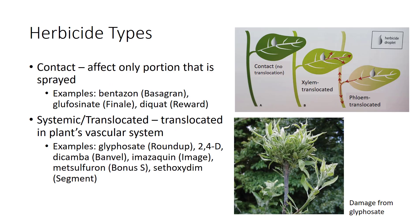Some herbicides have the ability to move throughout the plant — systemic or translocated — and others damage only the parts of the plant that are sprayed on contact. Soil-applied herbicides enter plants through roots, shoots, seeds, rhizomes, bulbs, or tubers. The primary site of entry for foliar-applied herbicides is the leaf. Once inside the plant, the herbicide must reach a specific susceptible site. Contact herbicides typically kill only the tissue that is sprayed. Repeat applications are often needed with contact herbicides to kill regrowth from underground plant parts. Examples of contact herbicides include bentazon, glufosinate, and diquat.